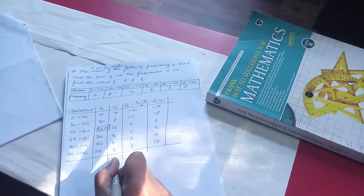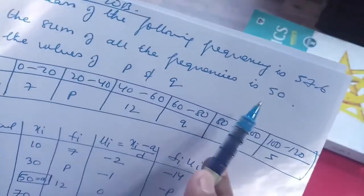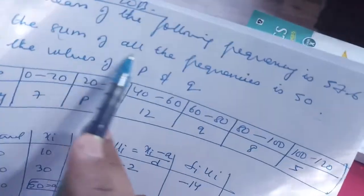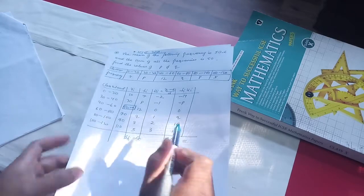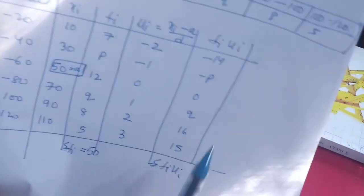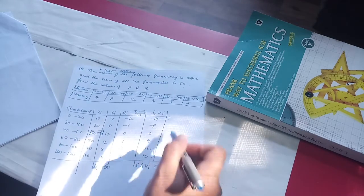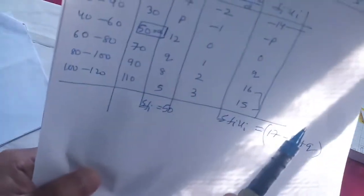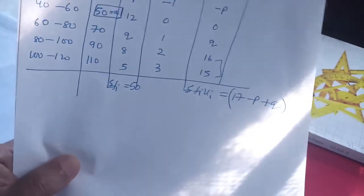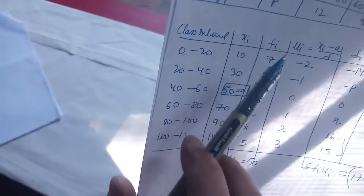For summation fi·ui: adding positives 16+15 = 31, minus 14, giving 31 − 14 − p + q = 17 − p + q. Since there are two unknowns p and q, we cannot solve with one equation — we need to make two equations.